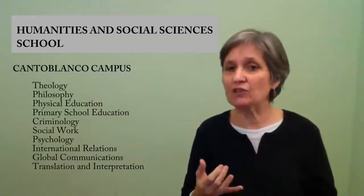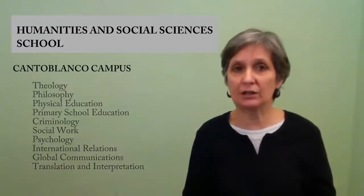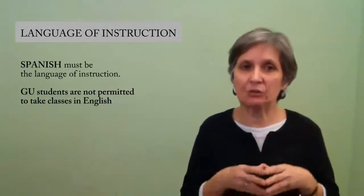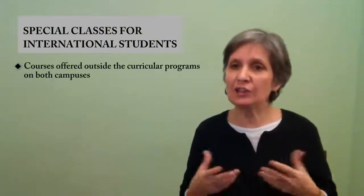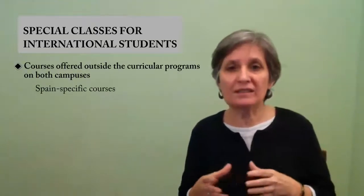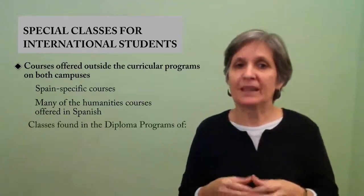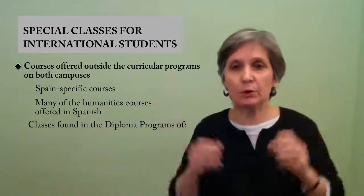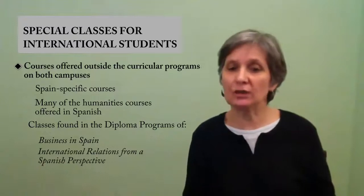The Humanities and Social Science School is located on the Canto Blanco campus, a short commuter train ride to the outskirts of Madrid. Here students may enroll in most of the degree programs offered, such as theology, philosophy, and psychology, but be aware that many classes in the international relations, translation, and communication degrees are only offered in English. So it's important to choose classes where the language of instruction is in Spanish. In addition to the classes found in the official degree programs, Comillas offers its international community additional classes that are more Spain-specific in nature. Those that focus on the humanities will be offered in Spanish — for example, classes on Spanish film or Spanish literature. These international student classes form part of the diploma programs of each school: in the Business School, these classes are found in the Diploma in Business in Spain, and in the Humanities School in the Diploma in International Relations from a Spanish perspective.